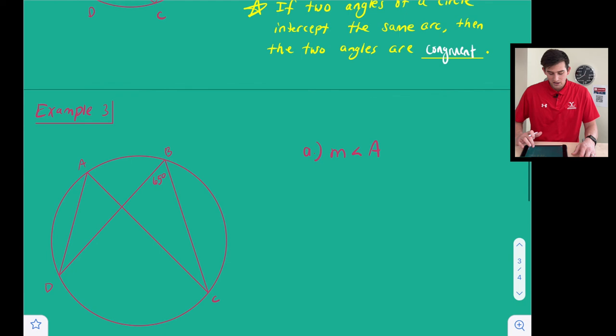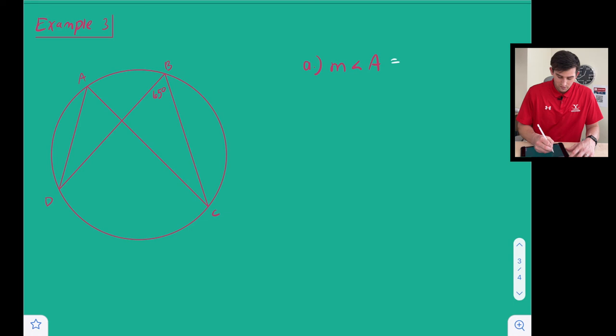Last example kind of going off of that sentence we just looked there says find the measure of angle A. Well the measure of angle B here is 65 degrees and notice how angle A and angle B both intercept arc CD. So that just means angle A is going to be congruent to angle B and that would be 65 degrees.